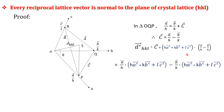Expanding: (a/h) · (h·a* + k·b* + l·c*) is the first term; (b/k) · (h·a* + k·b* + l·c*) is the second term. To simplify, we use the known identities: a · a* = 1; b · b* = 1; a · b* = 0; a · c* = 0; b · a* = 0; b · c* = 0.